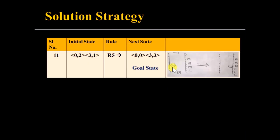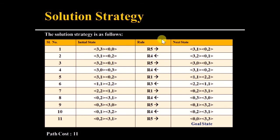Applying Rule 5 moves two cannibals from riverside one to riverside two, reaching the final goal state: no missionaries and no cannibals on riverside one, and three missionaries and three cannibals on riverside two. The solution rule sequence to remember is R5, R4, R5, R4, then R1, R3, R1, R4, then R5, R4, R5, R4, R1, R5 — reaching the goal state from the initial state in 11 steps. So the path cost is 11.